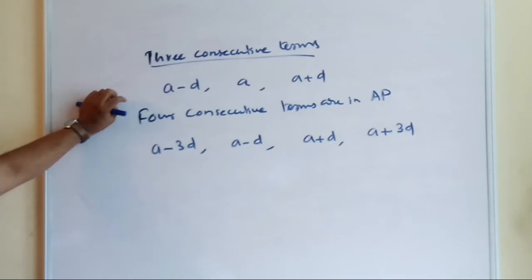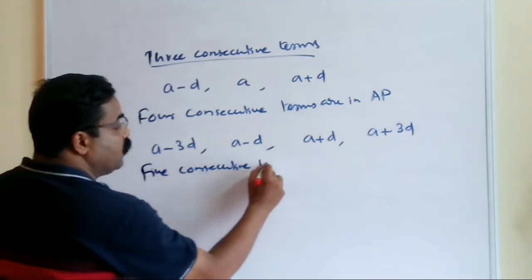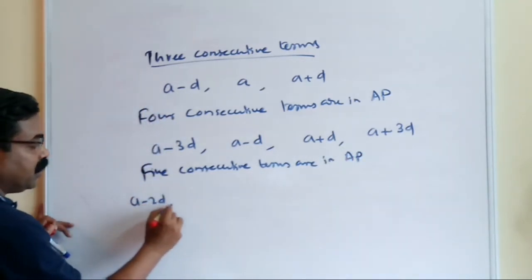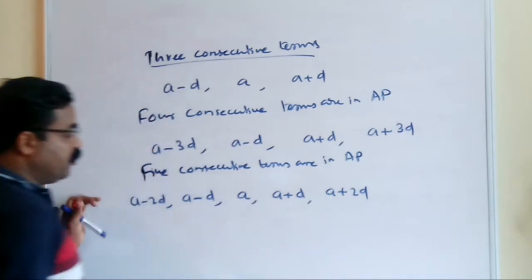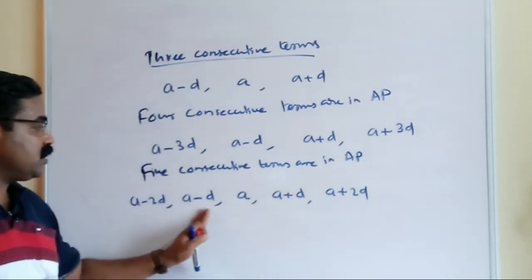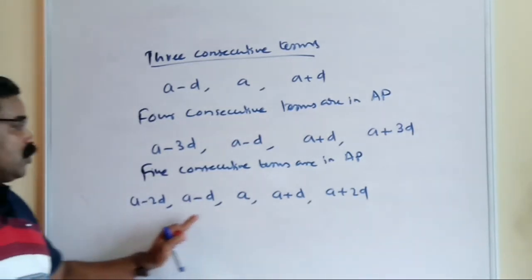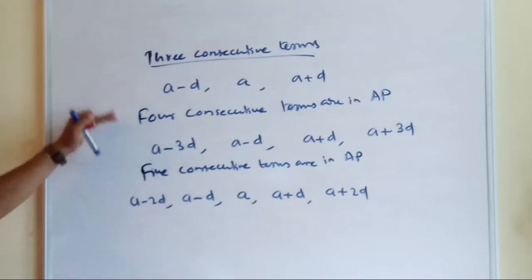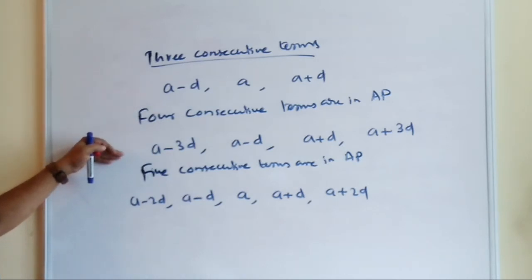For five consecutive terms in AP, take them as (a−2d), (a−d), a, (a+d), (a+2d). When you add them, −2d and +2d cancel, −d and +d cancel, leaving everything in terms of 'a'. These are important techniques used when the question says three, four, or five consecutive terms are in AP.